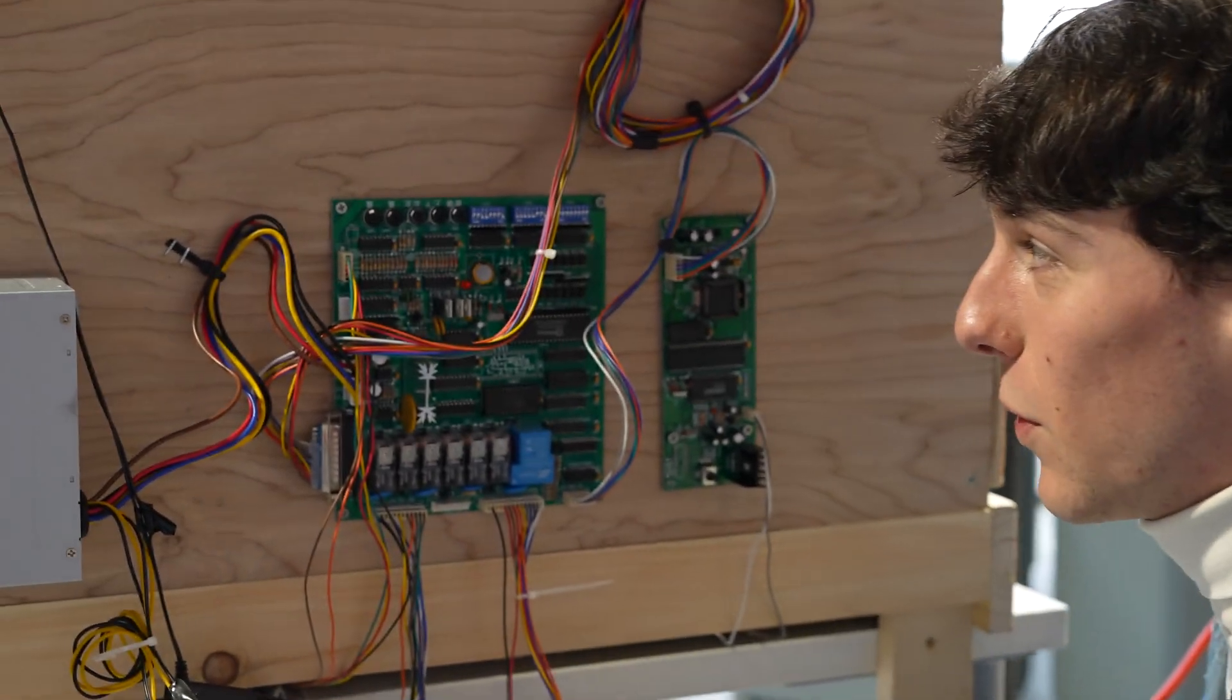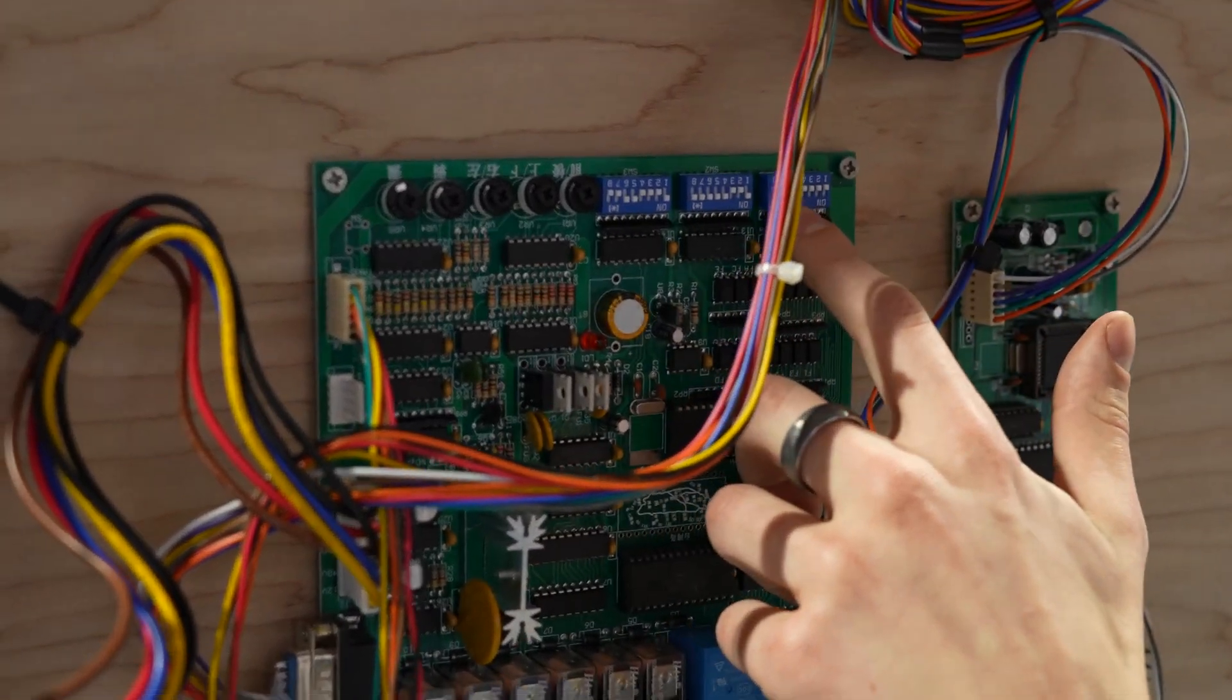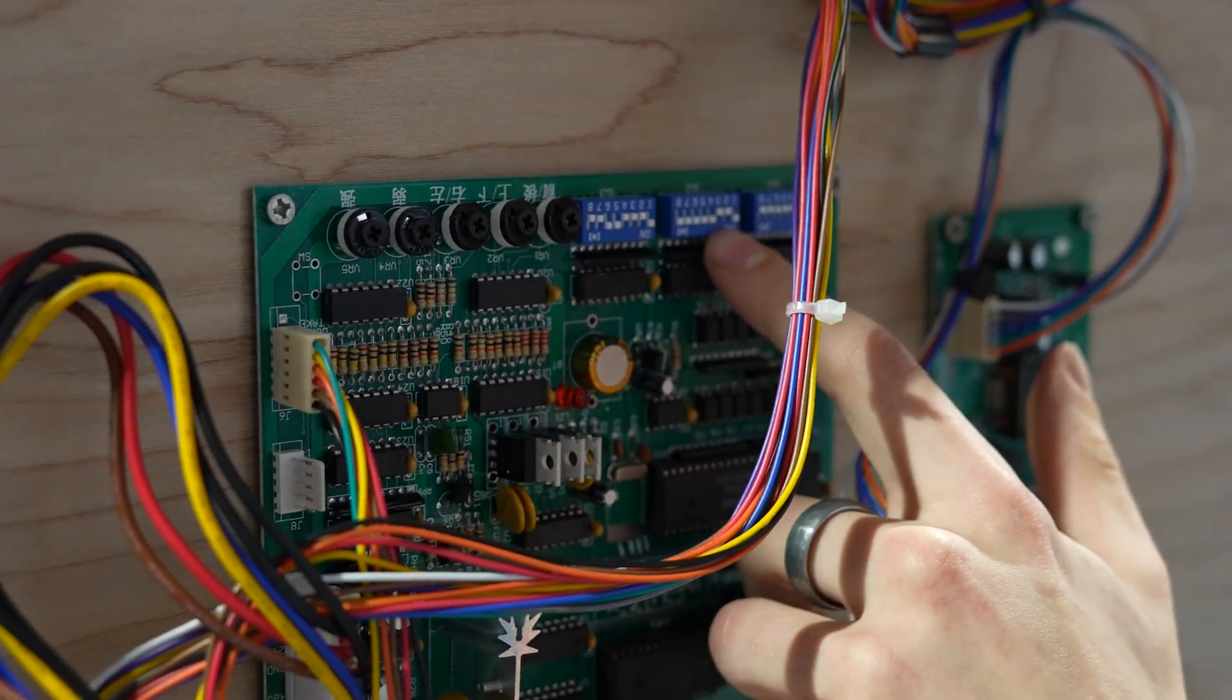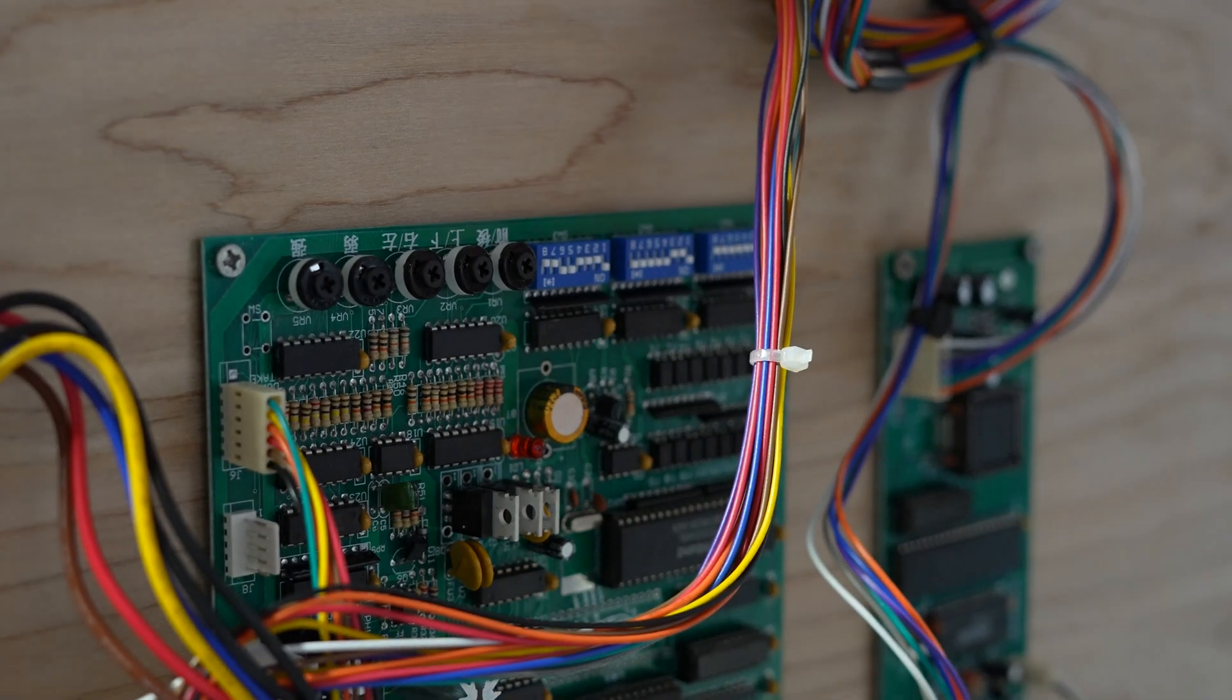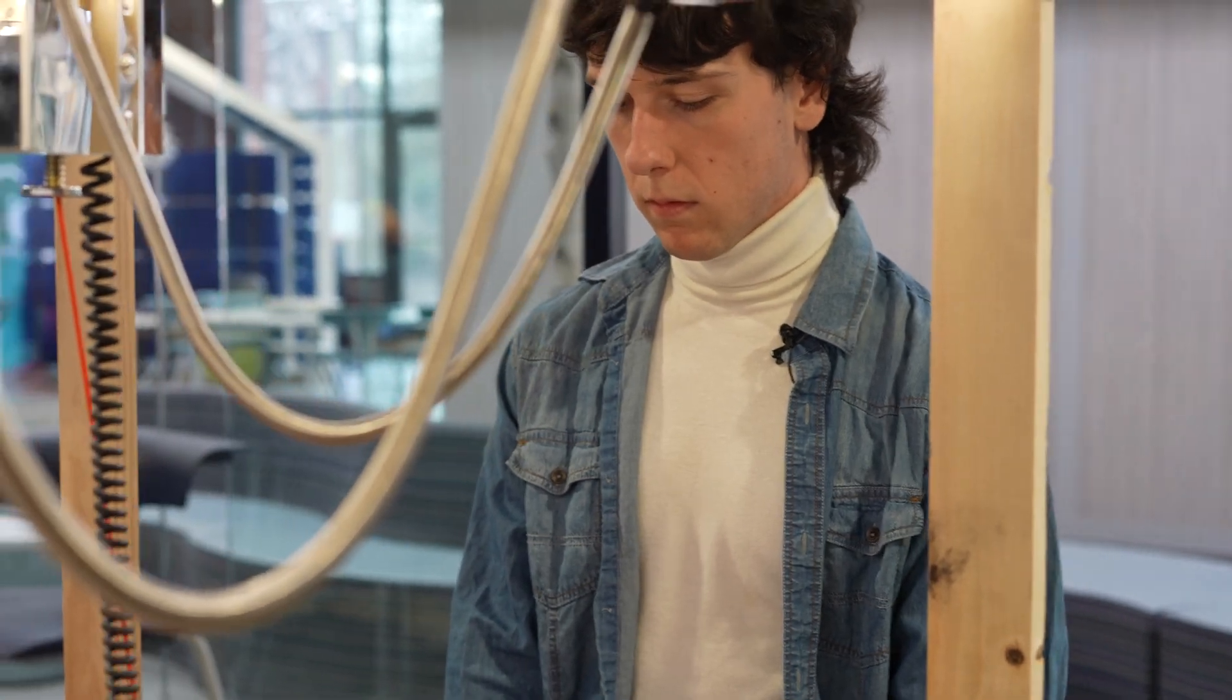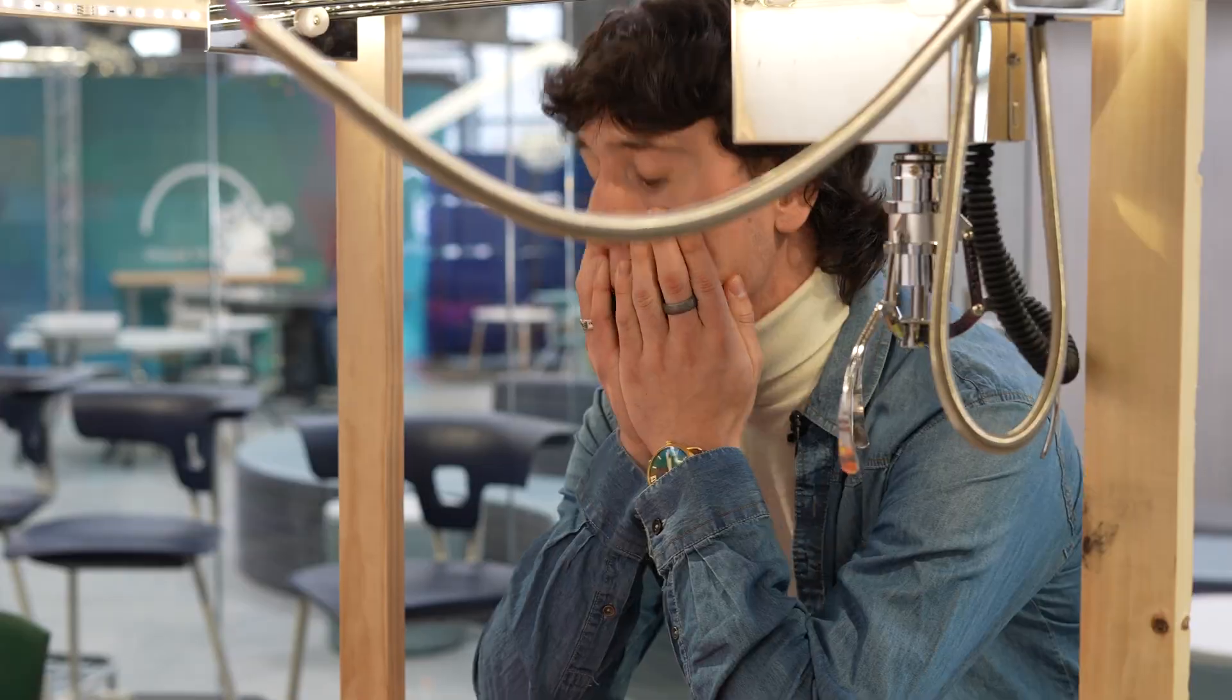There's two things about claw machines that make them almost unwinnable when someone wants them to be. On the back here there's a couple switches. This is how the owner can configure different settings about the machine. One of these controls how long the claw spends in weak mode and how long it spends in strong mode. So when it first grabs it starts off strong and then as the game progresses it goes into a weaker grip.